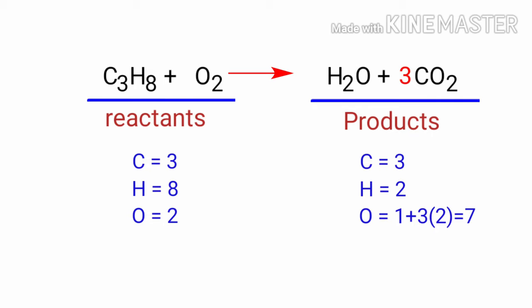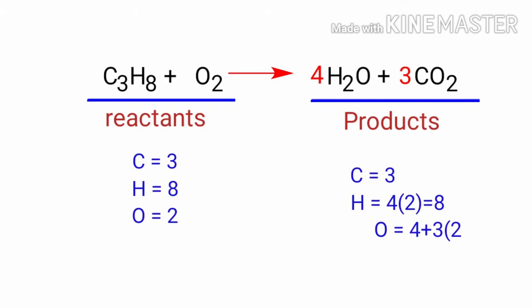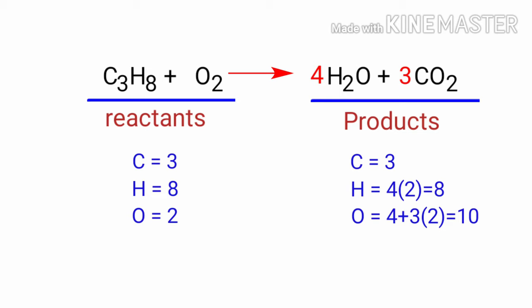Now we need to balance the hydrogen atoms. To do this, we need to put a coefficient of 4 in front of H2O. The hydrogen atoms are balanced.